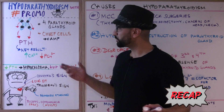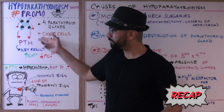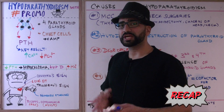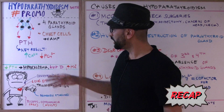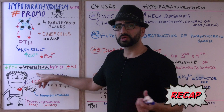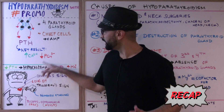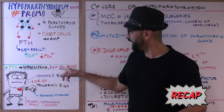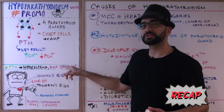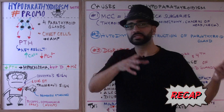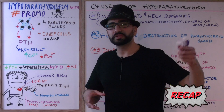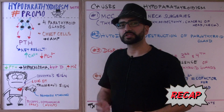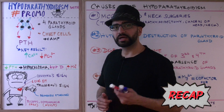Today's lecture is about what happens when there's too little PTH. Too little PTH will lead to hypocalcemia — low calcium levels. It's going to lead to increased phosphorus levels and decreased vitamin D levels. If you paid attention to the last two videos, you'll understand why vitamin D will be low and why phosphate levels will be high.